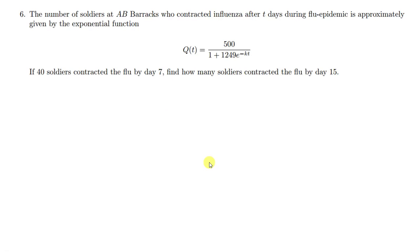The question is saying the number of soldiers at AB Barracks who contracted influenza after t days during a flu epidemic is approximately given by the exponential function. So this is the exponential function which is representing the number of soldiers.